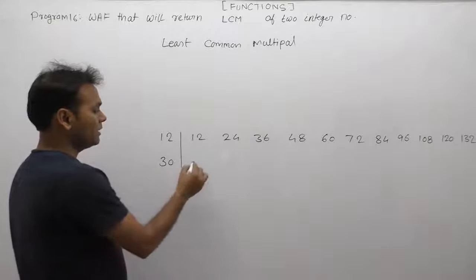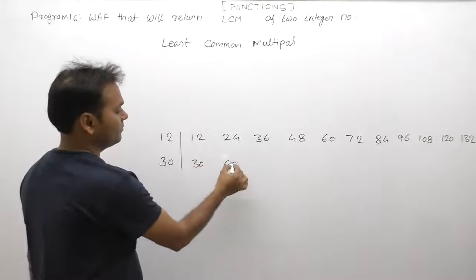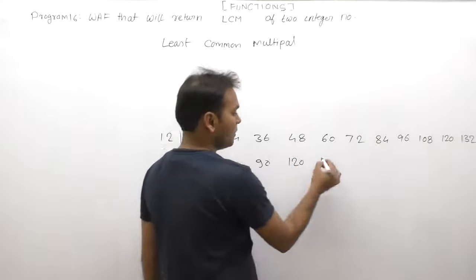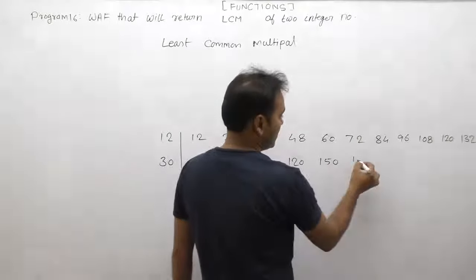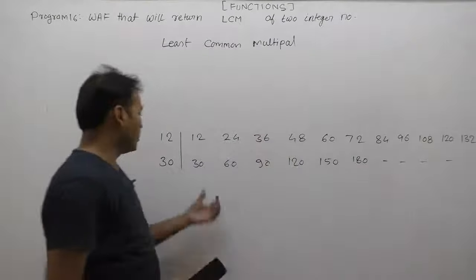Possible multiples of 30 are: 30 itself, 60, 90, 120, 150, 180, and so on.